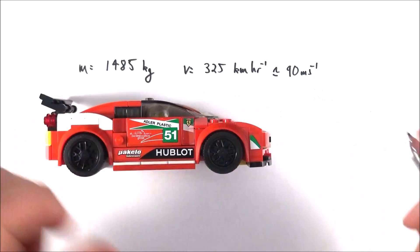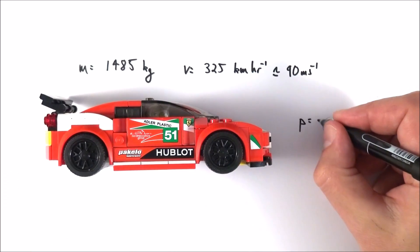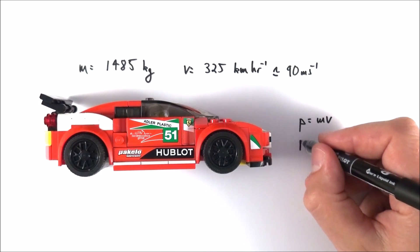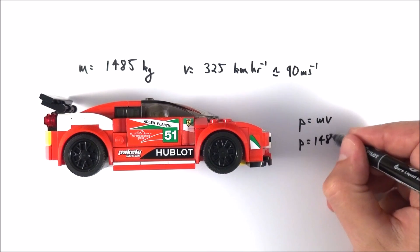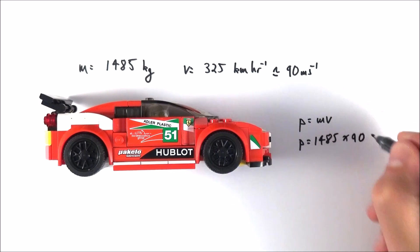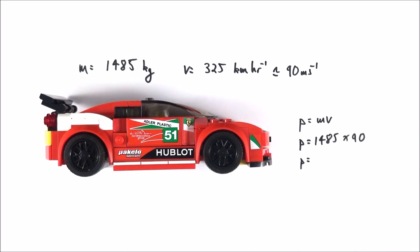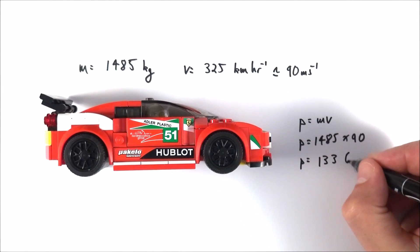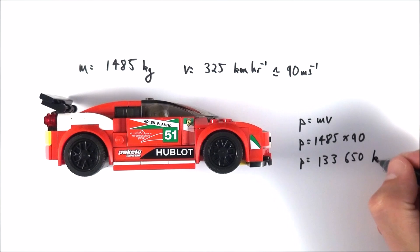So in order to calculate the momentum of this we can say that P is equal to mv, remember small p small m and small v, is equal to 1485 multiplied by 90. And if you put that number into your calculator its momentum is going to be 133,650 kilograms meters per second.